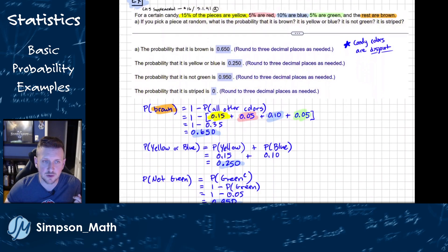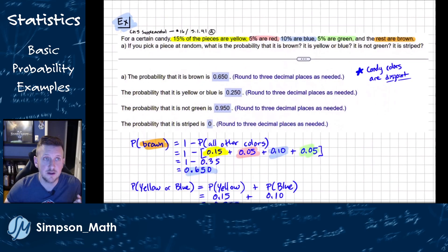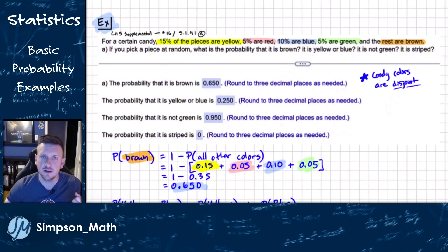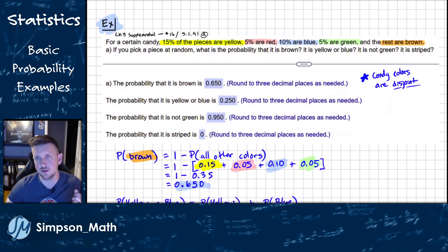This is a very similar question, just dealing with candies. For a certain candy, 15% of the pieces are yellow, 5% are red, 10% are blue, 5% are green, and the rest are brown. We're going to pick a piece of candy at random. What's the probability that it's brown?